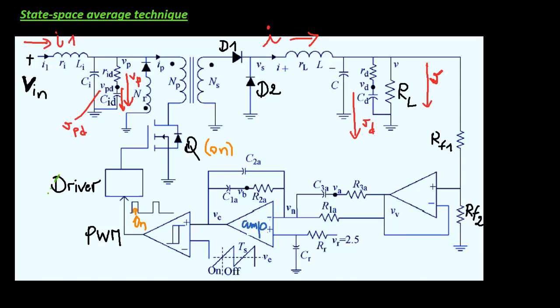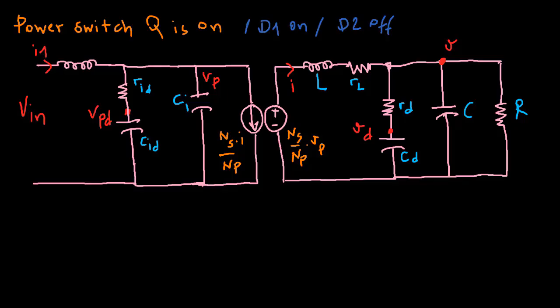Next, when the power switch is turned on, means D1 is on and D2 is off, and considering the transformer action, the power stage is in this on configuration.